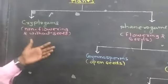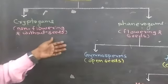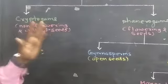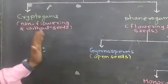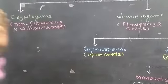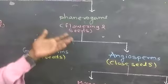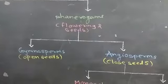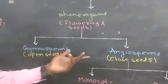In simple words, plants not having flowers as well as seeds come under the category of Cryptogam. Phanerogam is just the opposite — a plant having flowers as well as seeds comes under the category of Phanerogam. Phanerogam is further classified into two parts: the first part is Gymnosperm and the second part is Angiosperm.